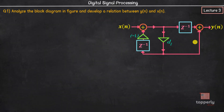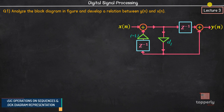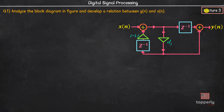We are given with the block diagram of a discrete time system and we need to find the relationship between x of n and y of n in it. The theory for this question was discussed in lecture 3 of our DSP playlist — if you have any doubts, please refresh those topics again. The link to that video is available in the description. Coming back to the question: first we have an adder circuit and we do not know the input at this node, so let us assume that the signal here is v of n.